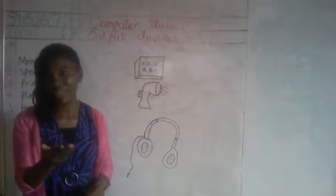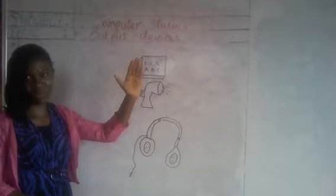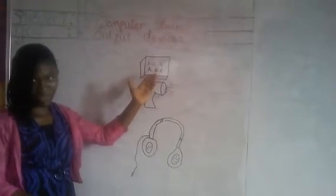Output devices are those components that give you results — that show you the results of what you are doing. For example, when you type something from your keyboard, you get the results from your monitor. Say I tapped one, two, three on my keyboard — I will see it on my monitor. So the monitor is called the output device because it shows what I am doing.